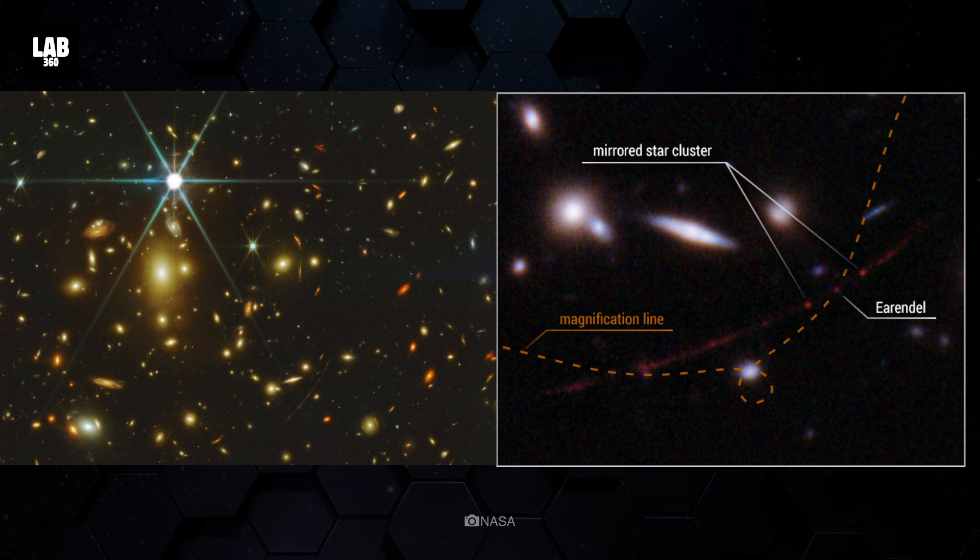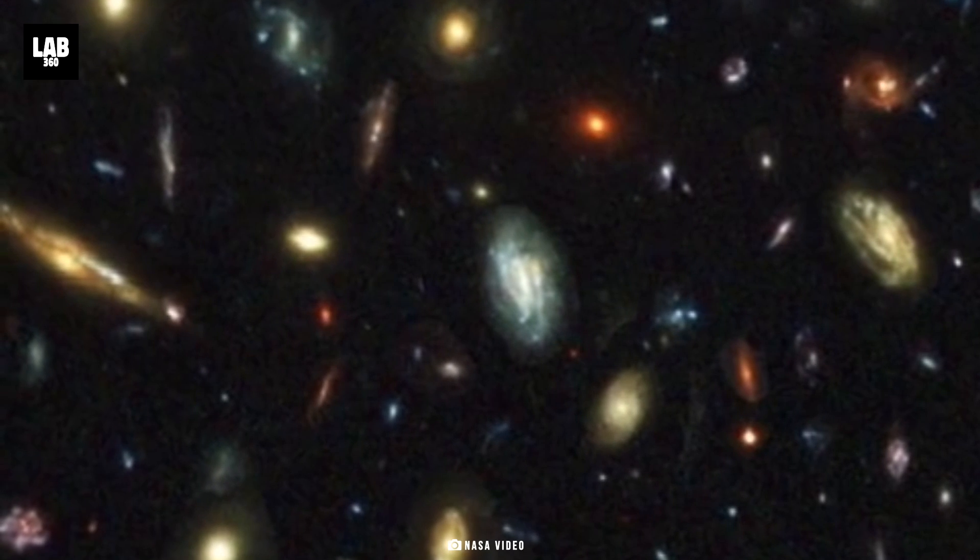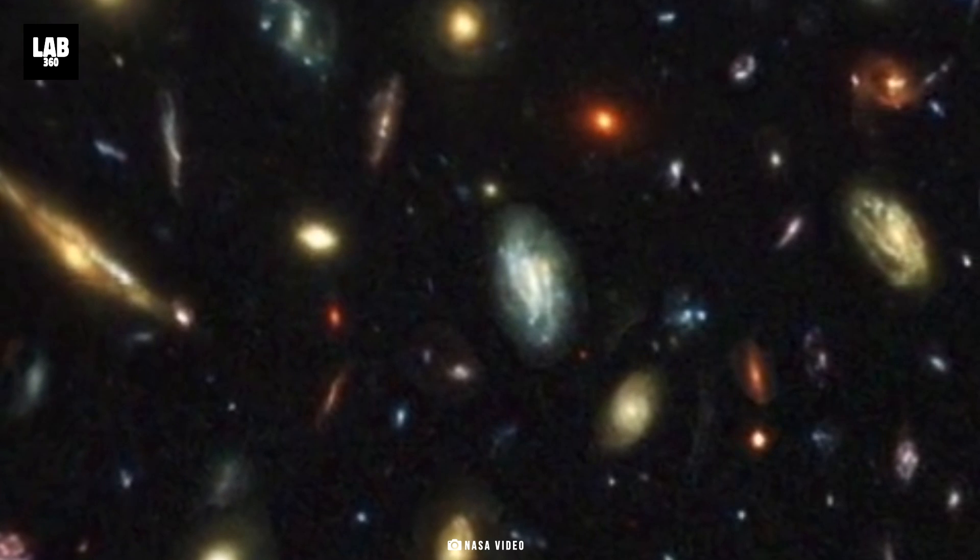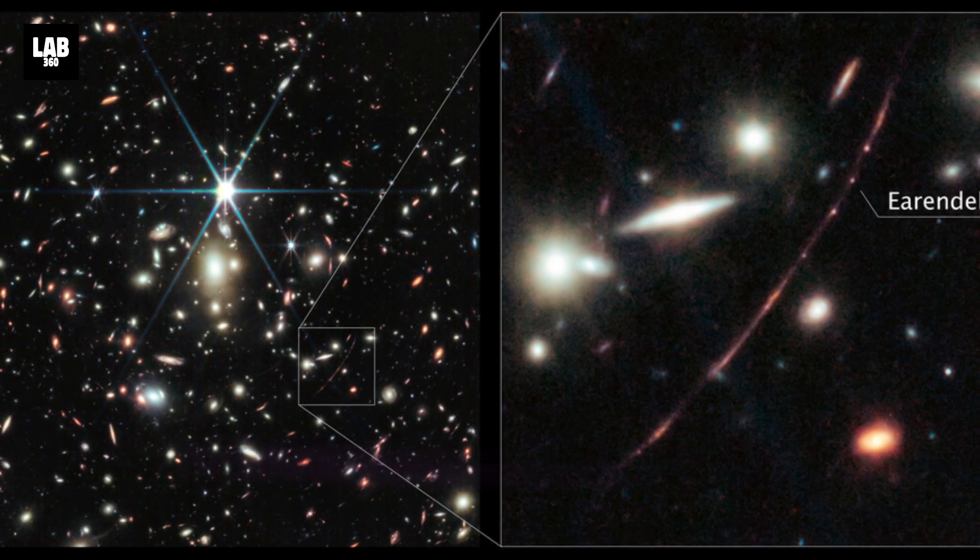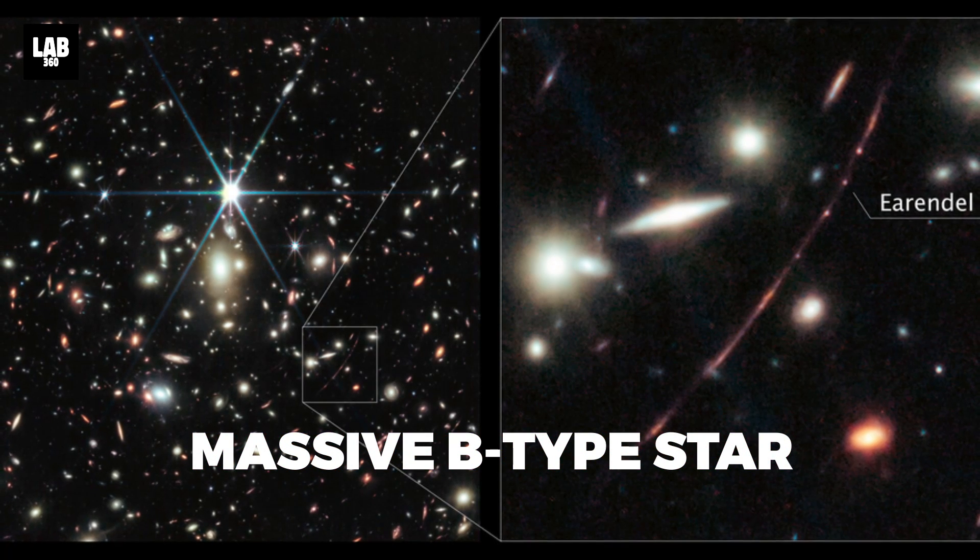How beautiful, isn't it? While other features in the galaxy appear multiple times due to the gravitational lensing, Erundel only appears as a single point of light even in Webb's high-resolution infrared imaging.